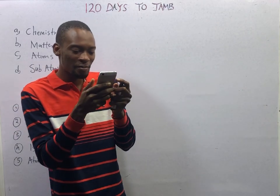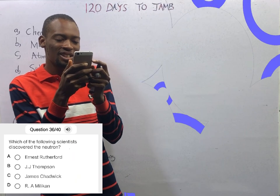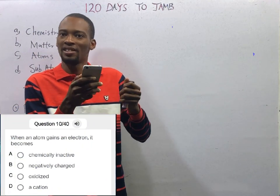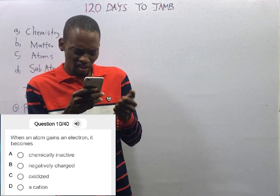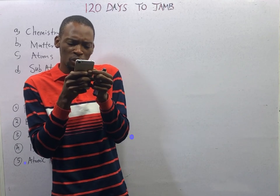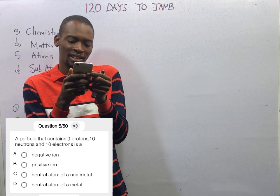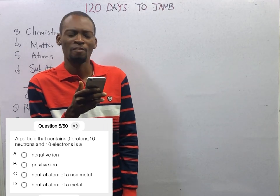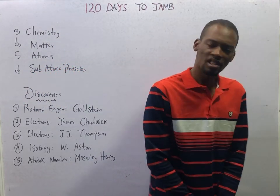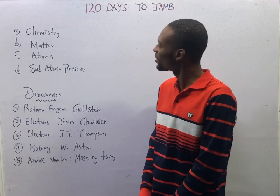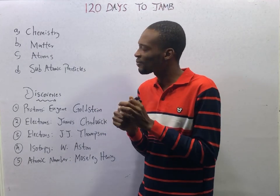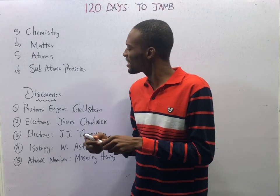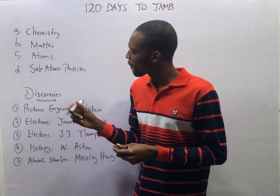The first question says: which of the following scientists discovered the neutron? The second question says: when an atom gets an electron, it becomes dash. The other question says: a particle that contains 9 protons, 10 neutrons, and 10 electrons is a dash. To answer these questions, it is very important that we understand chemistry, matter, atoms, and subatomic particles.